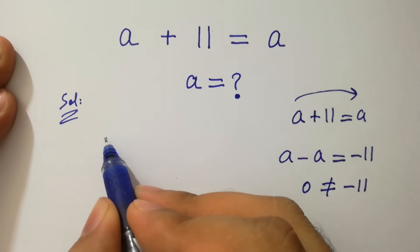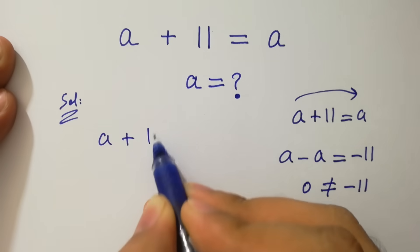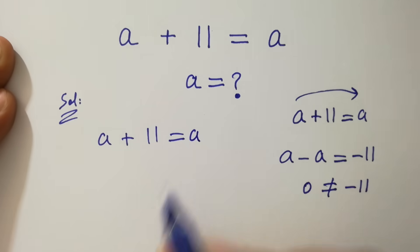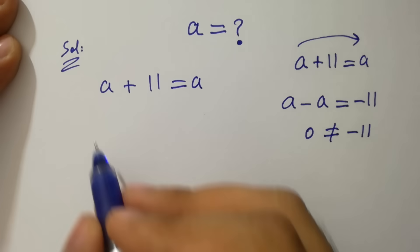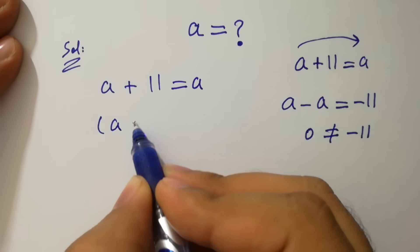We have a question here, a plus 11 equal to a. To solve this, take square on both sides.